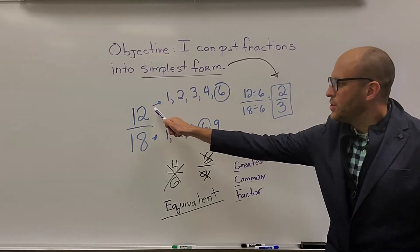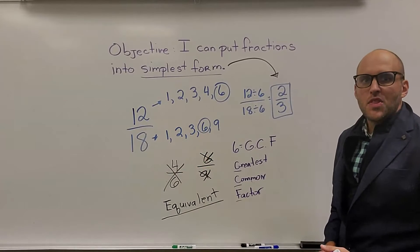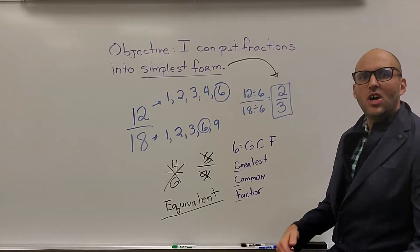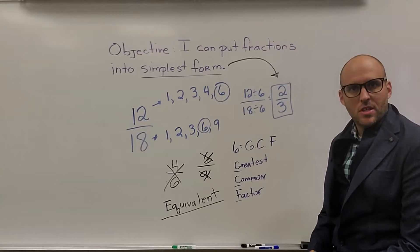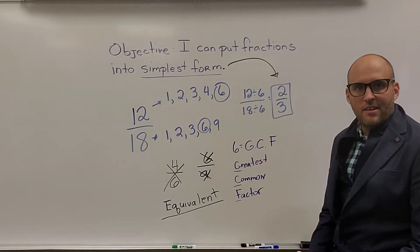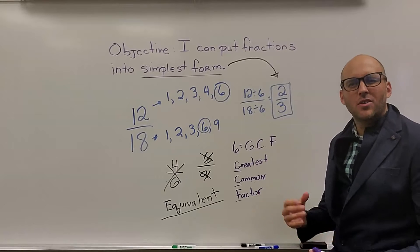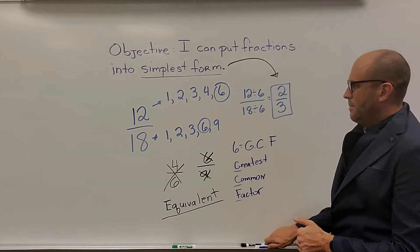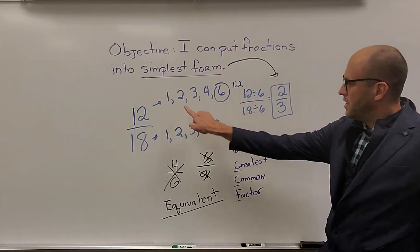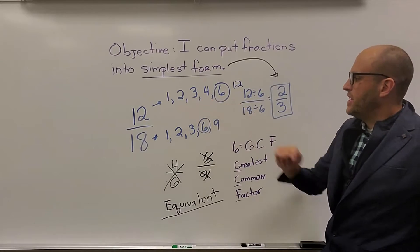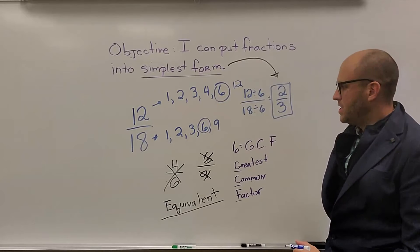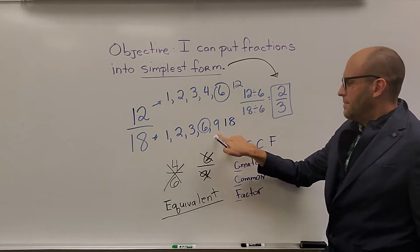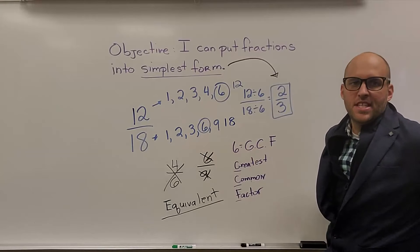So I have a fraction 12 over 18. The first thing I have to do is figure out all the factors of those numbers before I can figure out simplest form. So I have to figure out all the ways I can multiply and get 12. Well, I can multiply 1 times 12, 2 times 6, and 3 times 4. All those get me 12. I can multiply 1 times 18, 2 times 9, and 3 times 6.